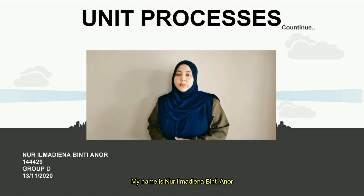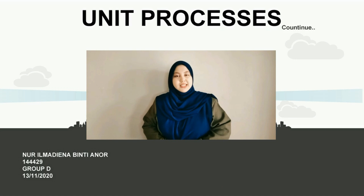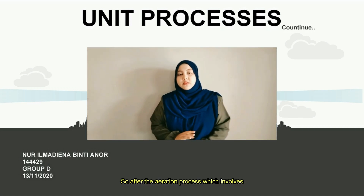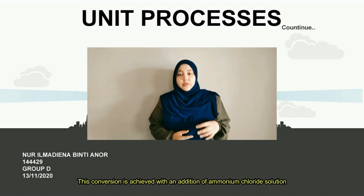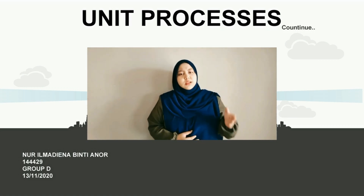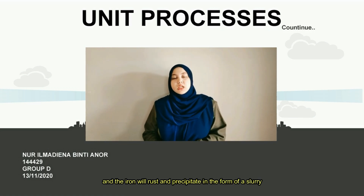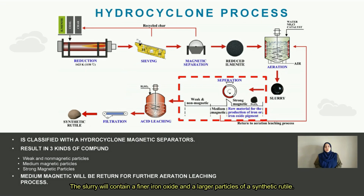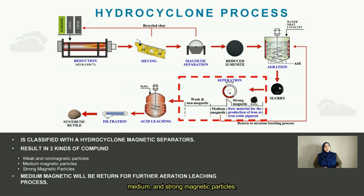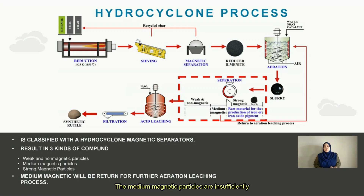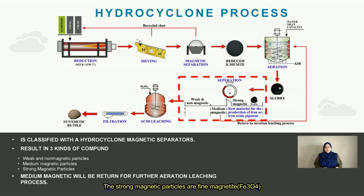Hi, my name is Melima and I'll continue with the unit processes. After the aeration process, ammonium chloride solution with air is pumped through a tank. The tank is continuously agitated, and the iron rusts and precipitates as a slurry. The slurry contains fine iron oxide and larger particles of synthetic rutile. It is classified using a hydrocyclone magnetic apparatus into three types: weak and non-magnetic, medium-magnetic, and strong-magnetic particles.